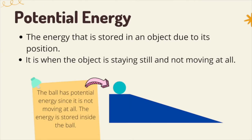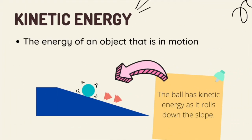Potential energy is the energy that is stored in an object due to its position. An object that is staying still has potential energy. In the image, the ball has potential energy since it is not moving at all. Kinetic energy is the energy of an object that is in motion. In the image, the ball has kinetic energy as it rolls down the slope.